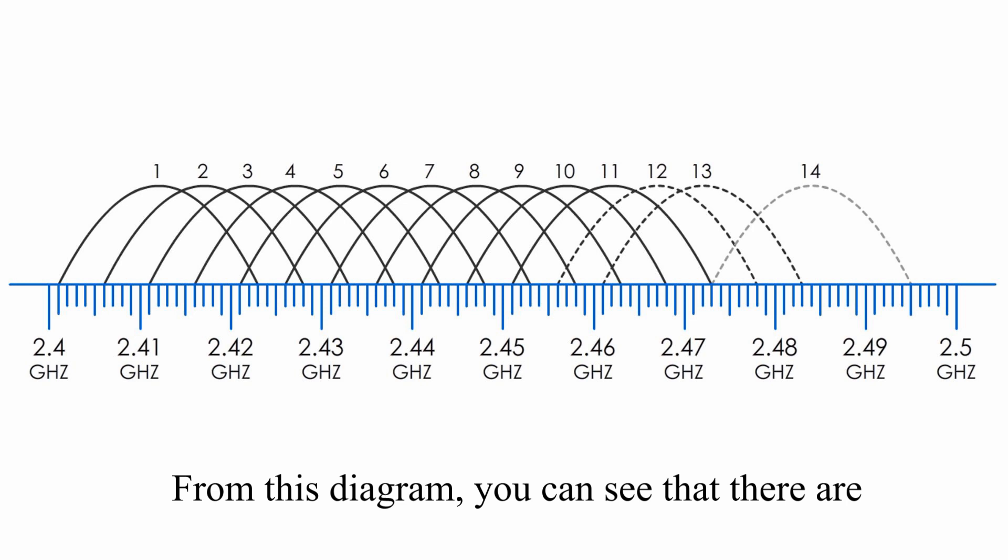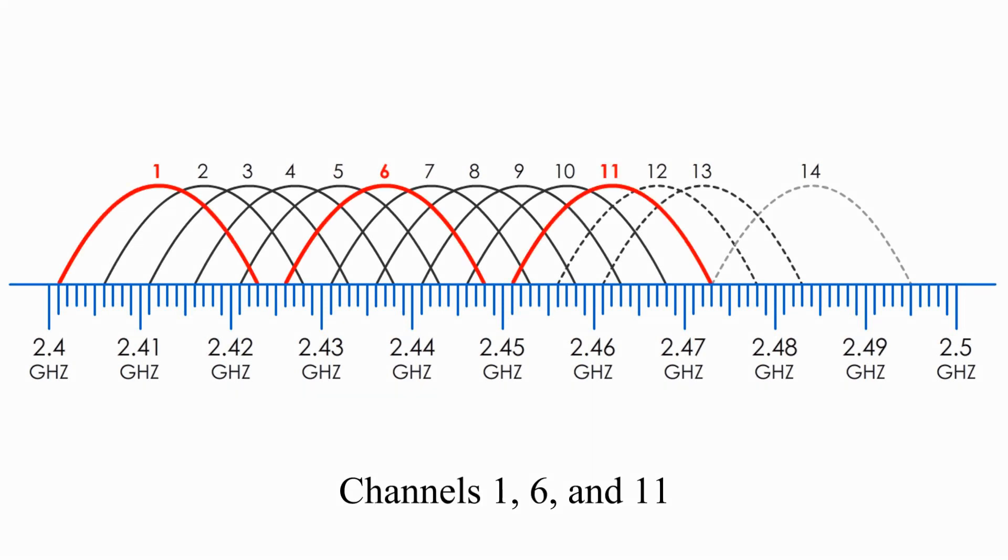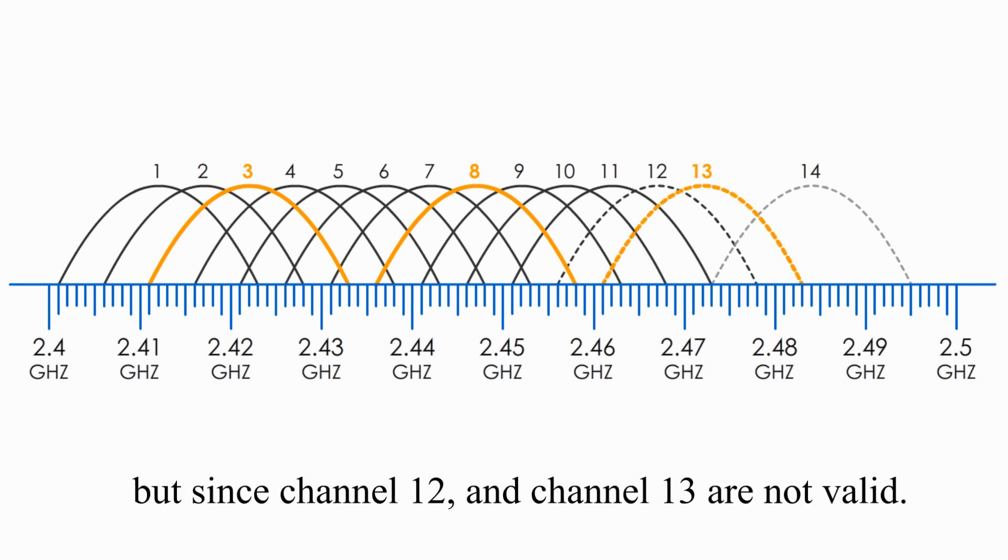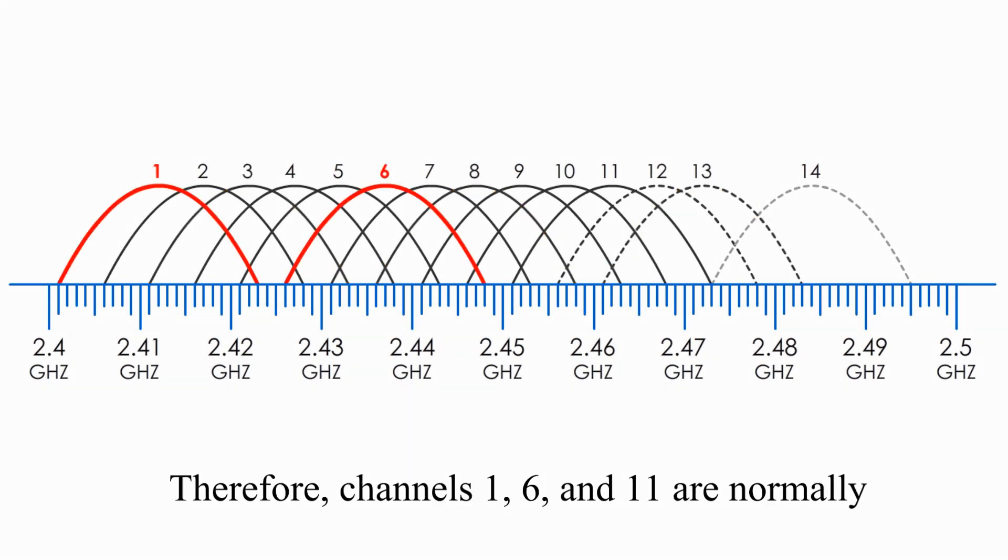From this diagram, you can see that there are several groups of 3 non-overlapping channels, such as channels 1, 6, and 11, channels 2, 7, and 12, or channels 3, 8, and 13. But since channel 12 and 13 are not valid, therefore, channels 1, 6, and 11 are normally chosen in practice in North America.